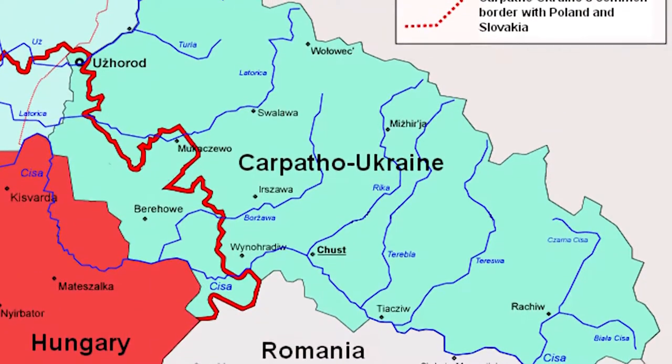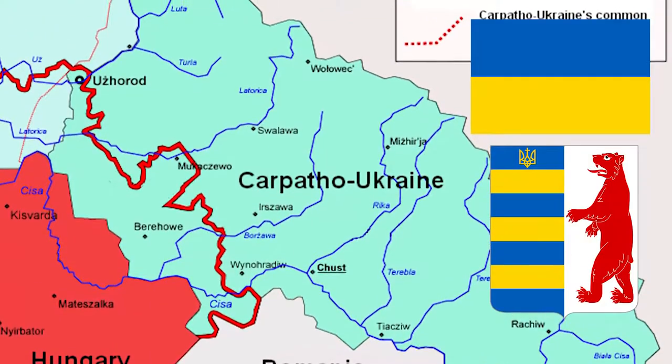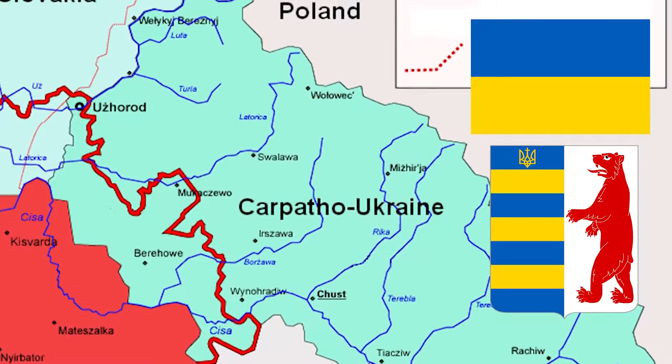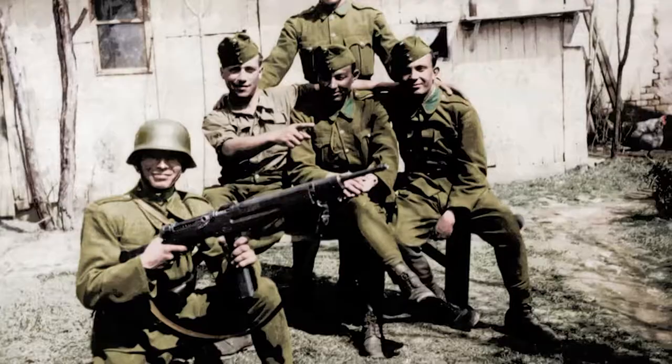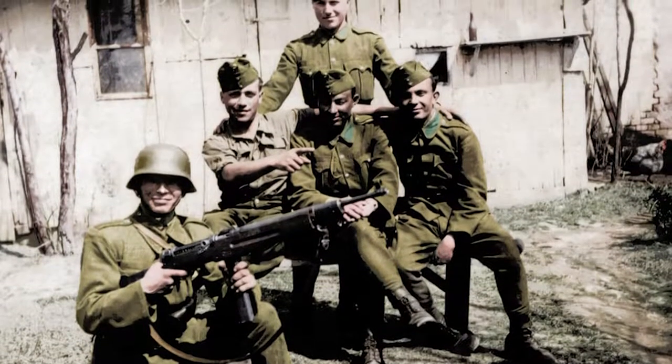1939, before the outbreak of the Second World War, there was a very short-lived Ukrainian state called Karpato-Ukraine. It basically proclaimed itself independent from Slovakia when Czechoslovakia was invaded by the Nazis and Slovakia became a Nazi puppet state. After this, the Hungarian army, allies of the Nazis, marched in and ended this very short-lived republic. The Karpato-Ukraine had existed for one day.